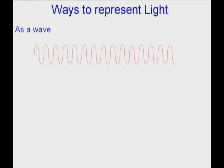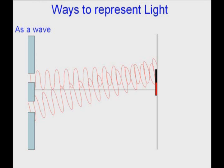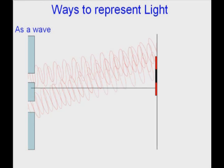We can represent light as a wave. We use this to explain the double slit pattern with constructive interference, destructive interference, constructive interference and so forth.